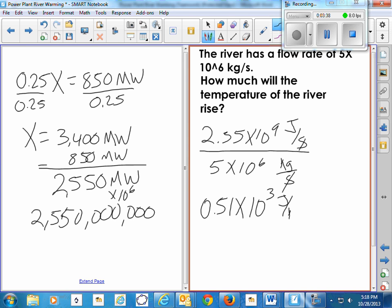Well, it takes 4,000 joules to heat 1 kilogram of water 1 degree. So we know it's going to be less than 1 degree.